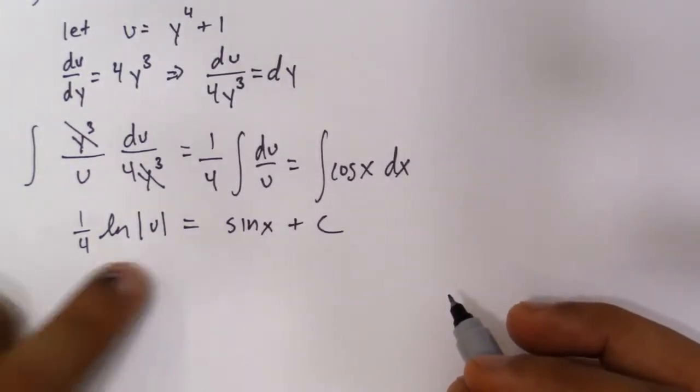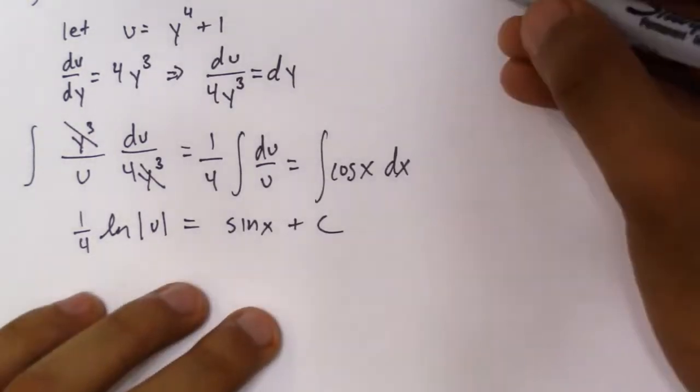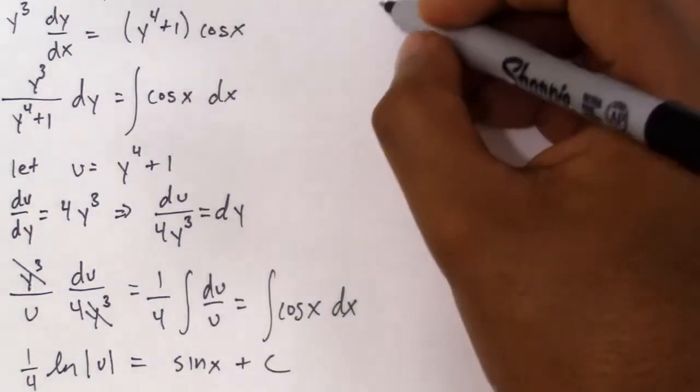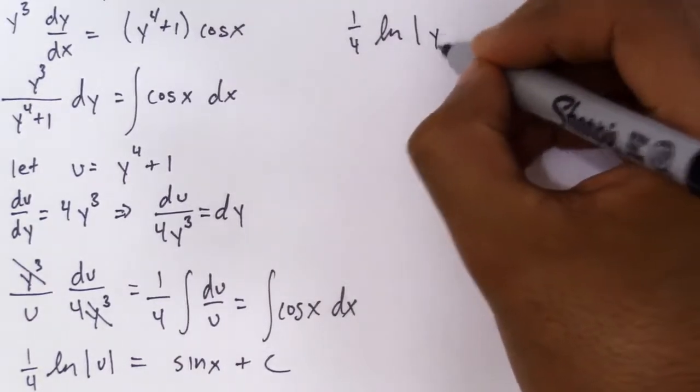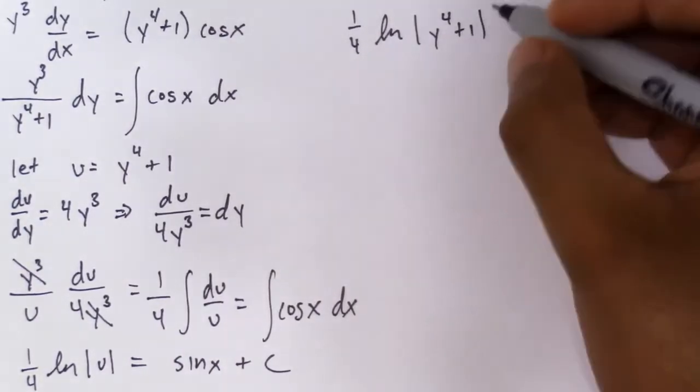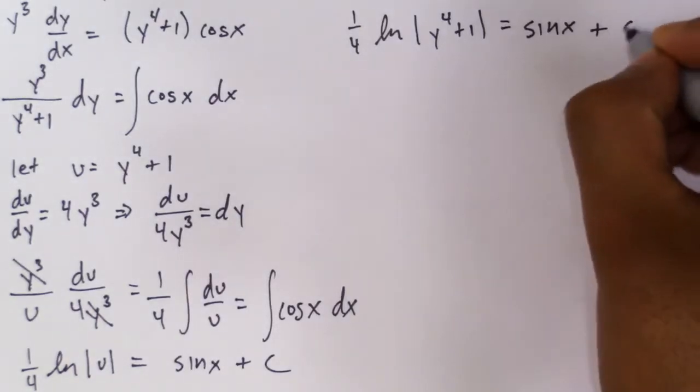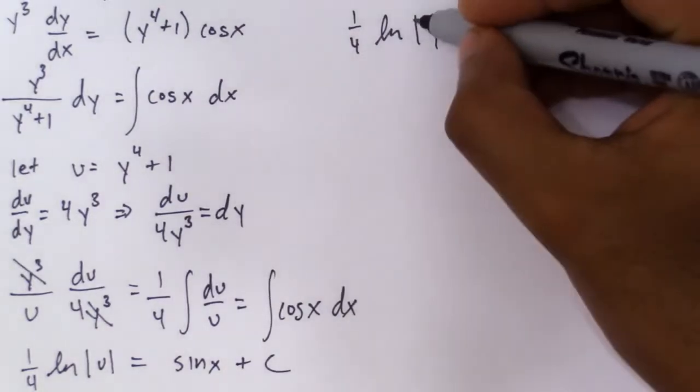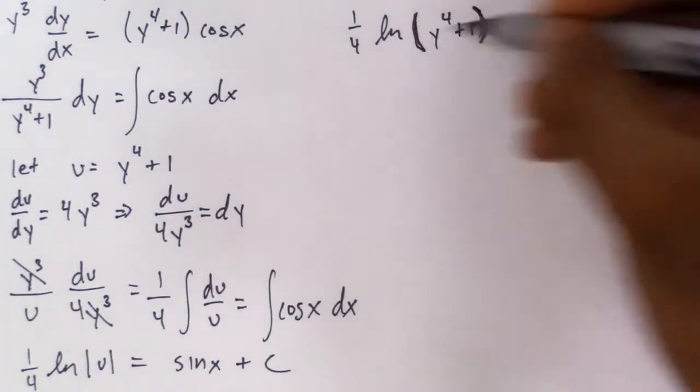And all we have to do is plug in u. So we have the general solution. If we plug in u, we get 1/4 ln(y⁴+1) which equals sin x plus C. This doesn't need the absolute value anymore because this is always positive.